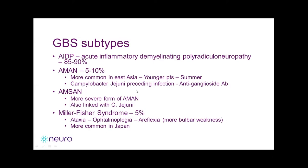The last subtype is called Miller-Fisher syndrome, which is much more rare than the other subtypes. Usually you don't have a lot of weakness — maybe only 20 percent of patients with Miller-Fisher will have weakness. Most of the time you have involvement of your eye muscles — ophthalmoplegia, meaning eye muscle paralysis — so you have double vision. You also have loss of reflexes and ataxia, which means balance problems. So you have difficulty walking because of the balance problems, but not because of weakness, and you're not as likely to require intensive care.